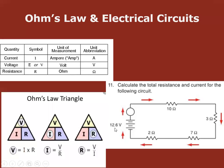Now we have 22 ohms and 12.6 volts. Amps = Volts ÷ Resistance = 12.6 ÷ 22 = 0.57 amps. That is the current flowing through this series circuit.